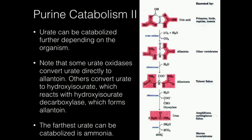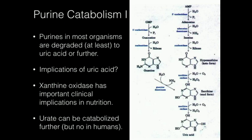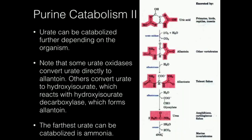Urease can break down urea into ammonia and carbon dioxide, and ammonia is the form of nitrogen excreted from nucleic acids by marine invertebrates. When talking about humans, we don't go any further than uric acid. We actually have a gene for urate oxidase, but it is transcriptionally inactive — we don't make the mRNA and therefore don't make the protein. As a result, we can't metabolize uric acid further, and that's mainly what we're concerned with for the next video on uric acid and urate.